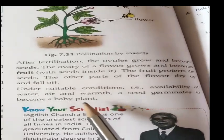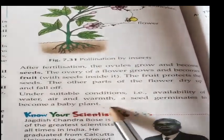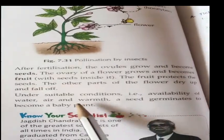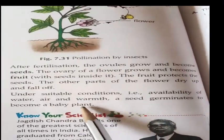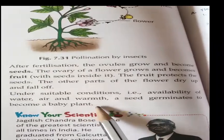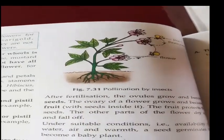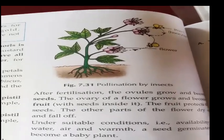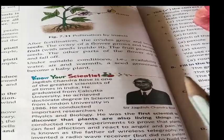Under suitable conditions — that is, availability of water, air, and warmth — the seed germinates and becomes a baby plant. In this way, the flower plays an important role in the formation of seeds and fruits.